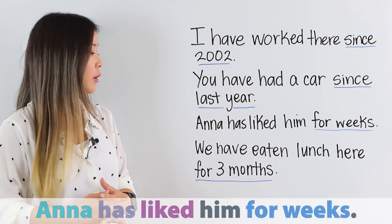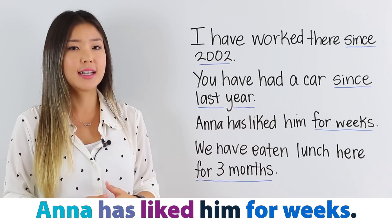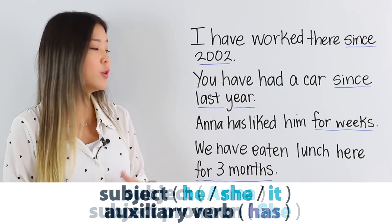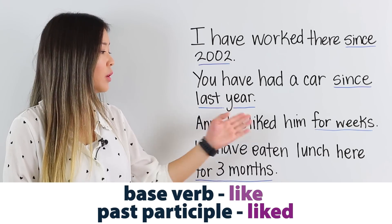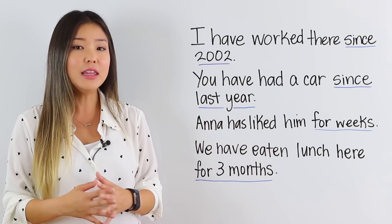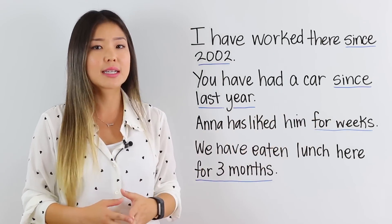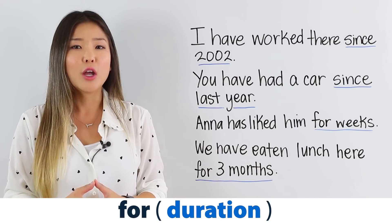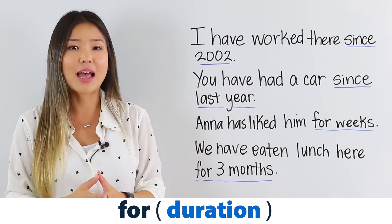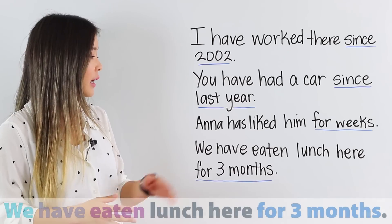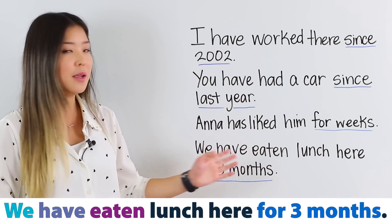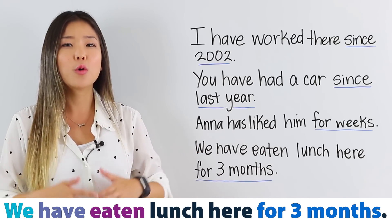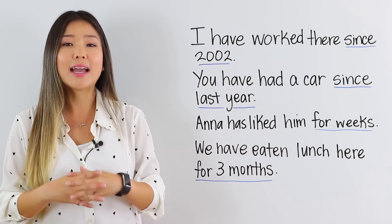Take a look at the next example: Anna has liked him for weeks. In this case, the subject is Anna, which is a she, and so we use has. Then the past participle — liked. However, at the end of this sentence we see for weeks, not since weeks. When we use for, we talk about the duration — we explain how long this action has been true. And finally, we have eaten lunch here for three months. Again, the sentence ends with for three months, so we show the duration. Let's move on to the next usage.